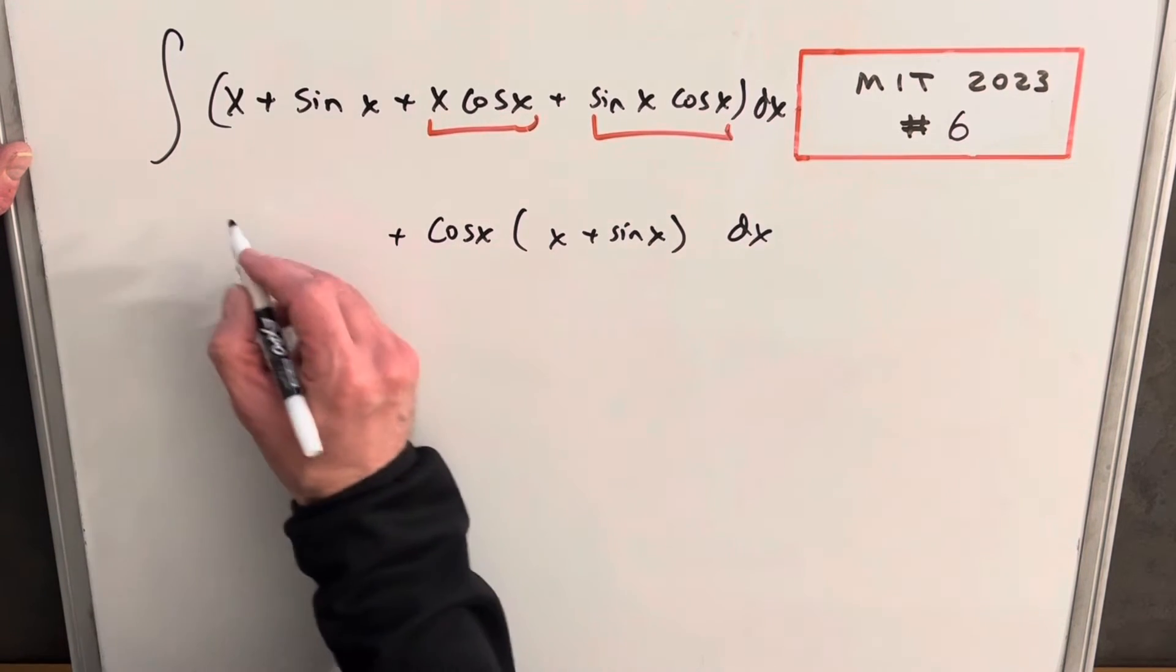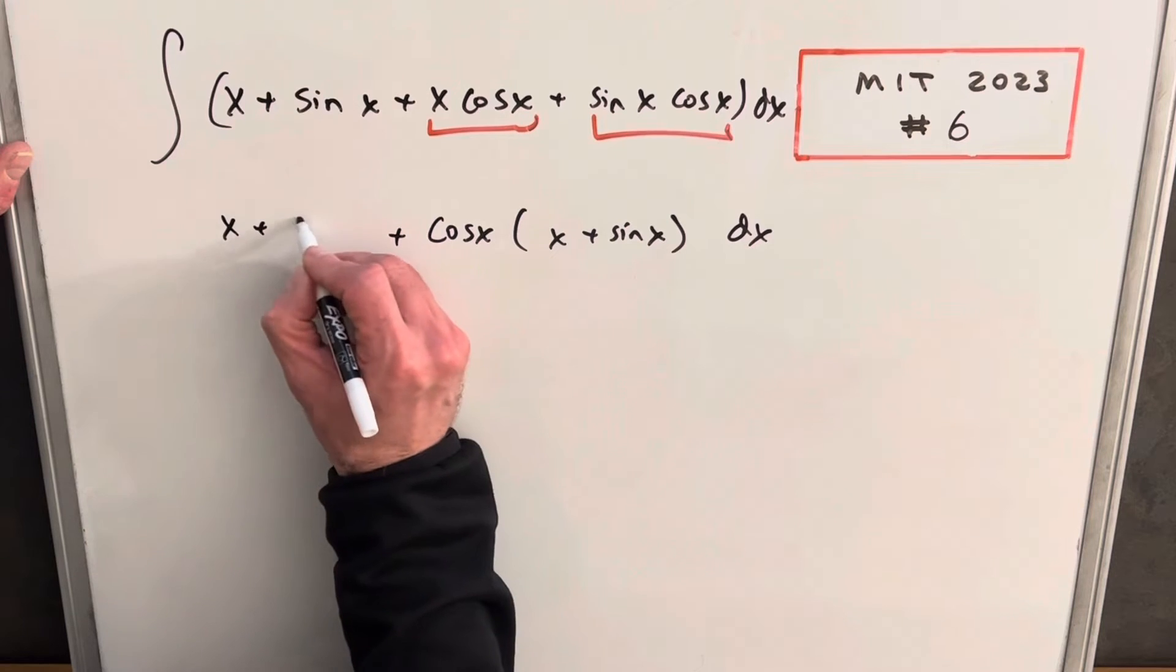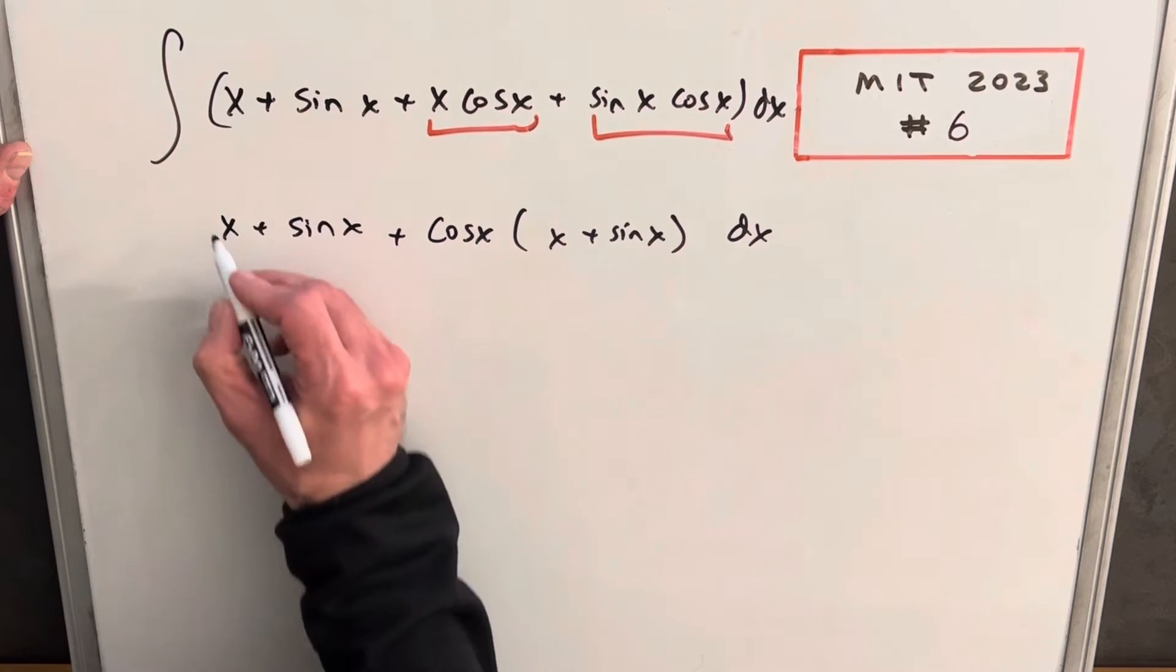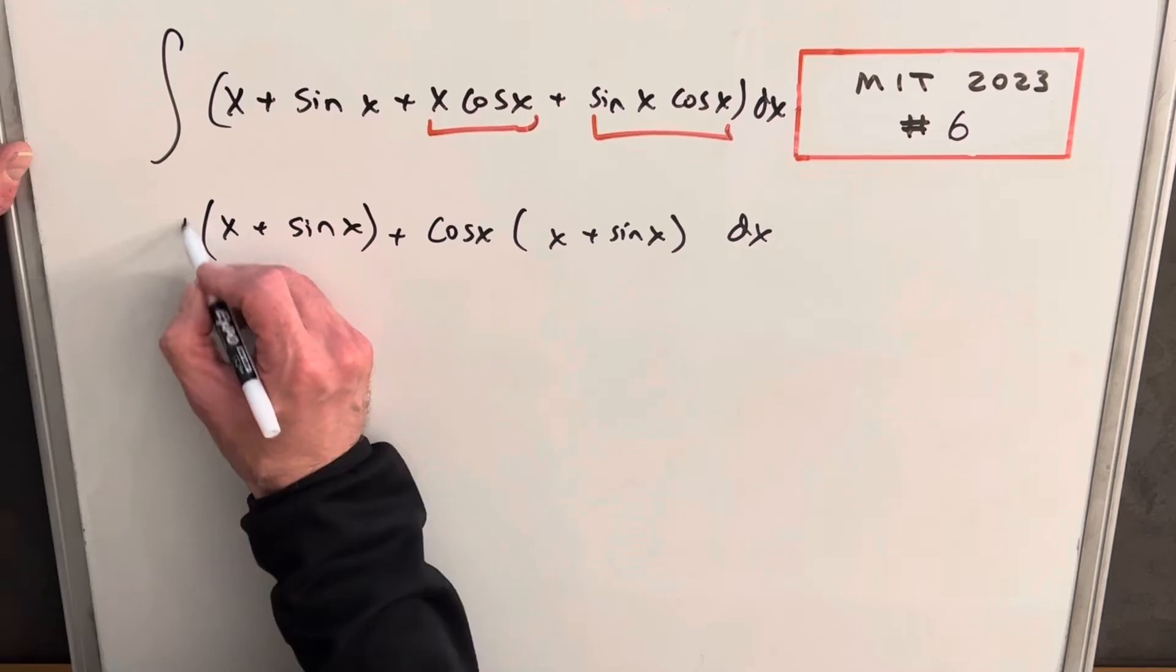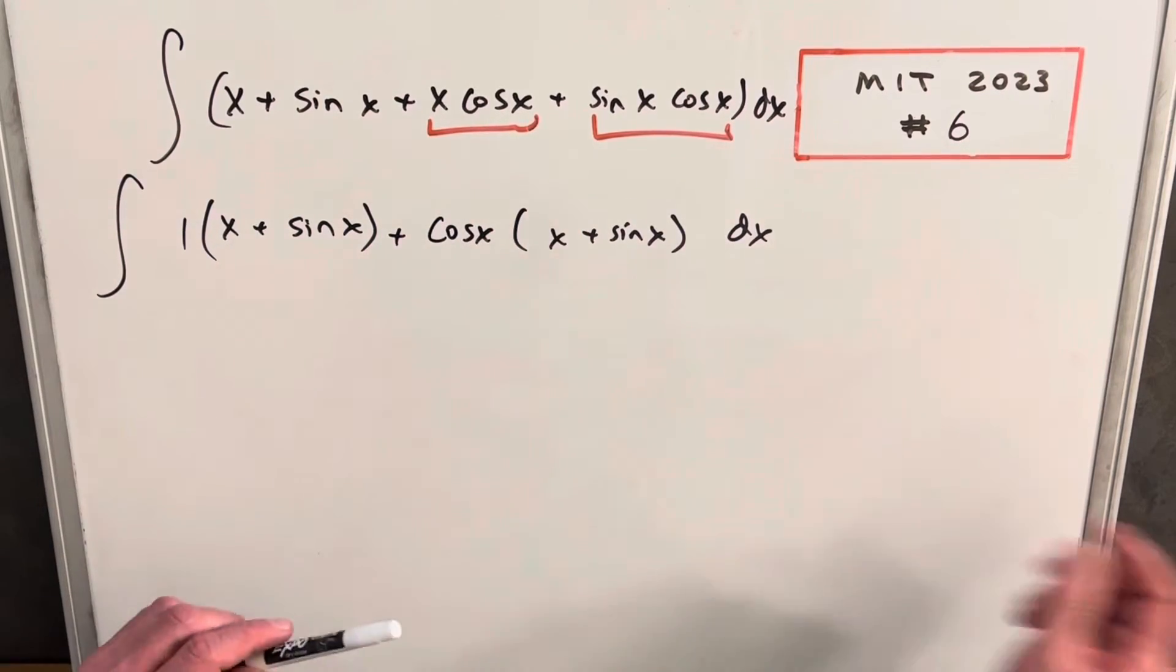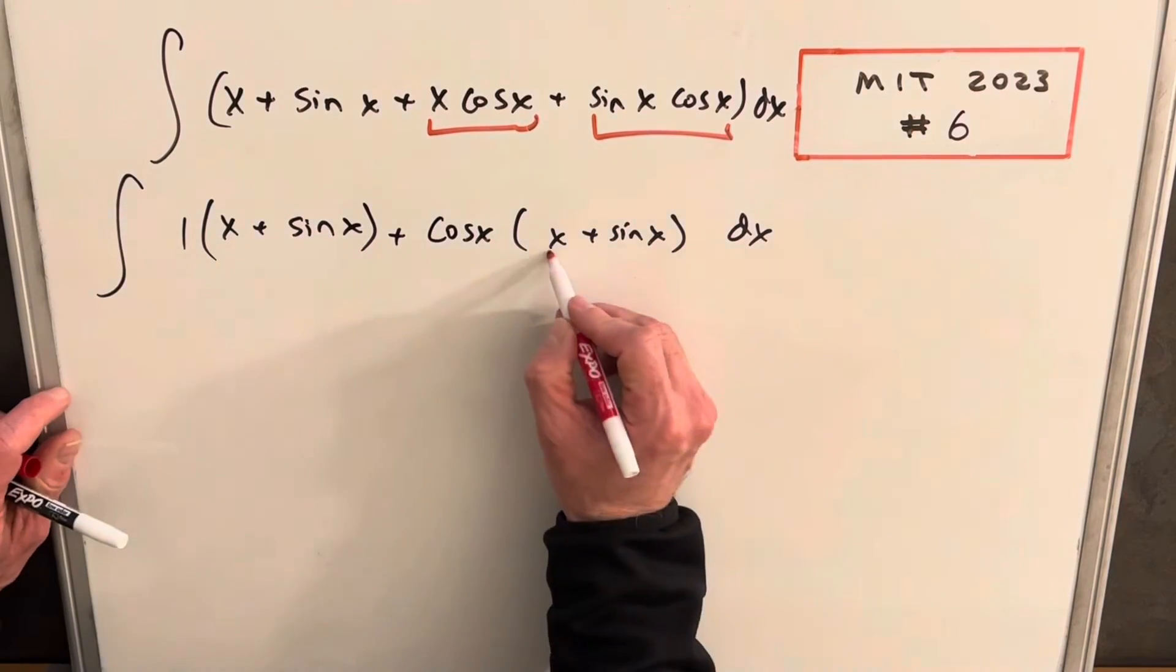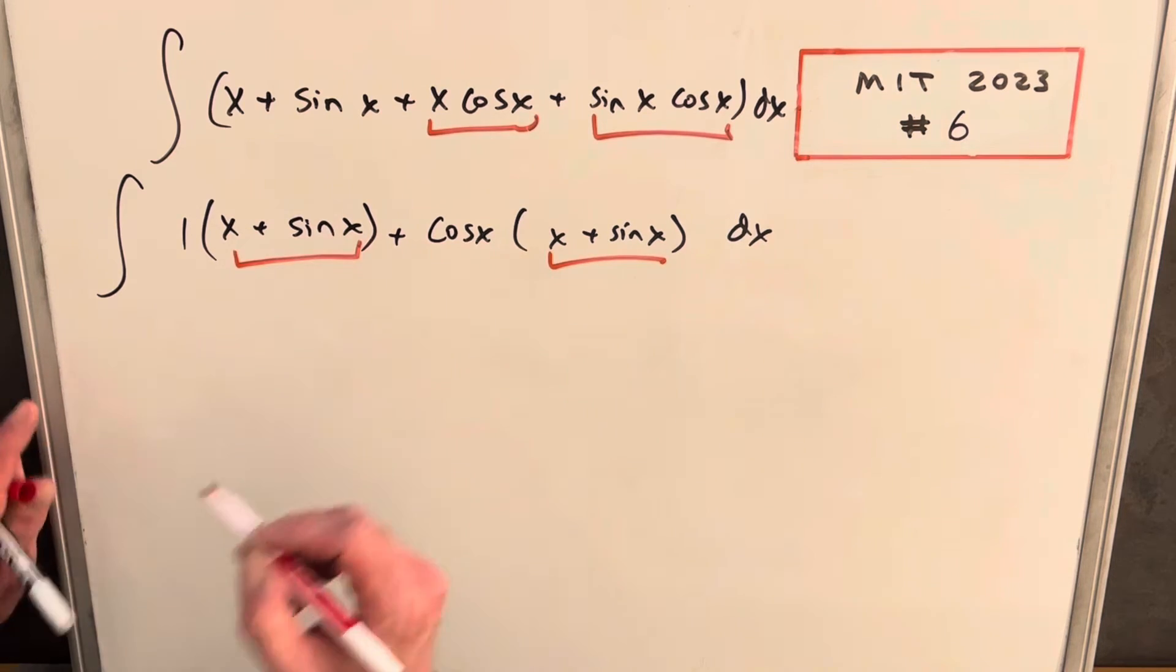And then notice over here we also have x plus sine x. What I'll do is I'll just kind of put a parenthesis. Factoring the cosine out here, then what we notice is we have this term in common, okay?